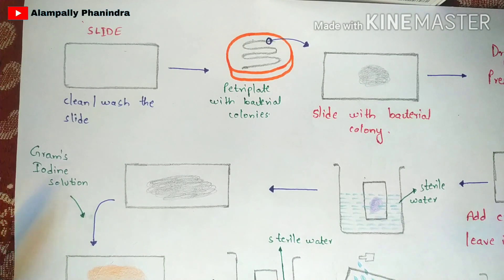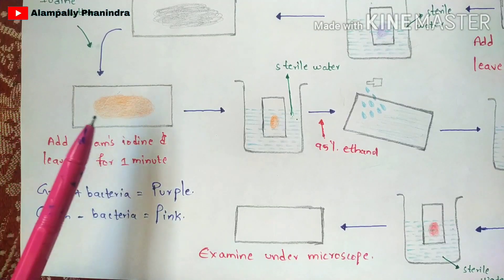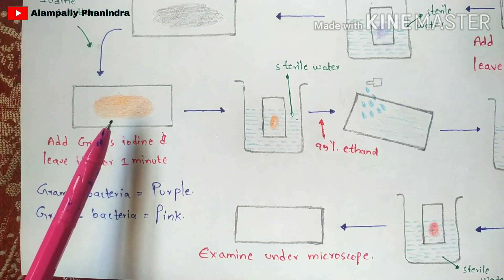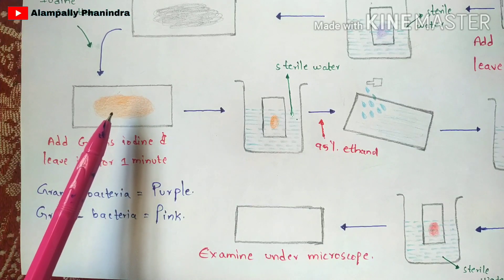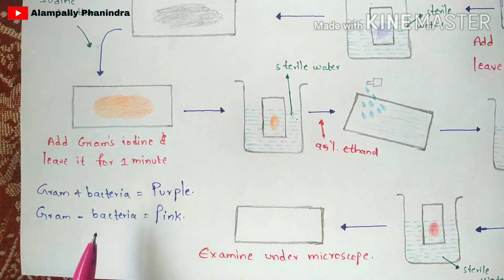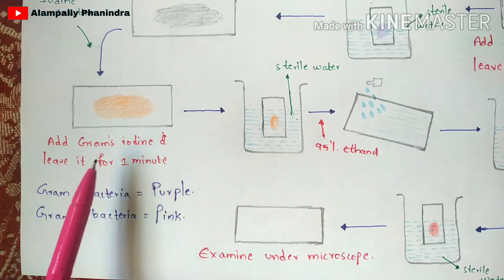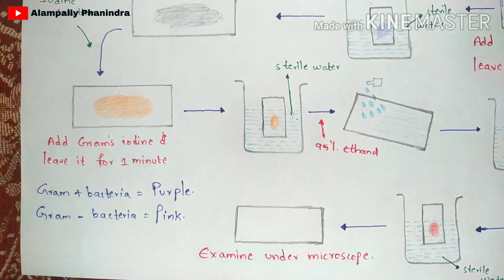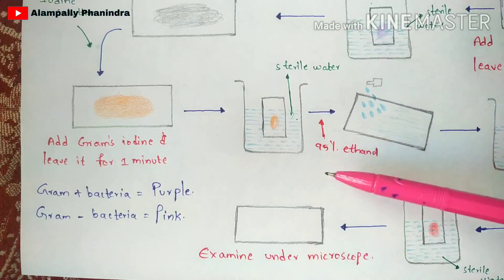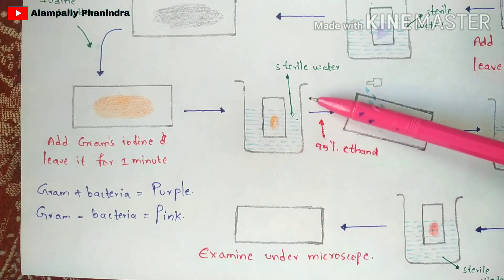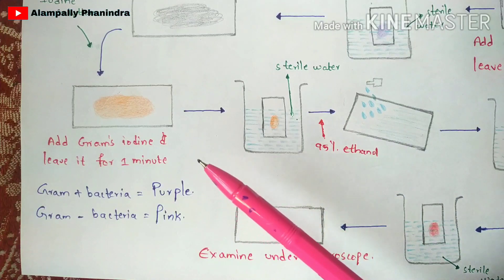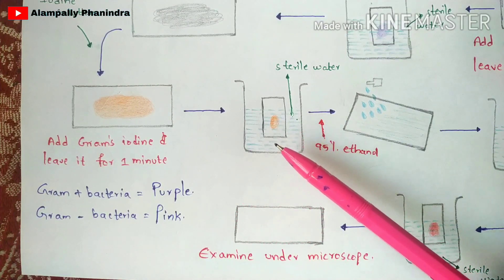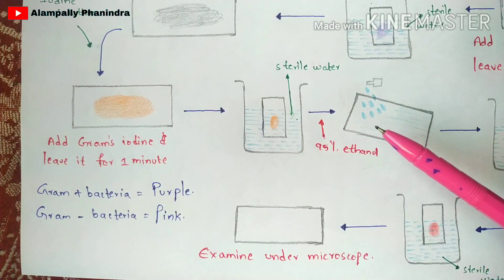Next, add gram's iodine solution to the slide — gram's iodine has a slightly orange color. Add it onto the slide containing the bacterial colony and leave it for one minute. After one minute, take a water bath with sterile water, dip the slide into it, and wash it. Then remove the slide.